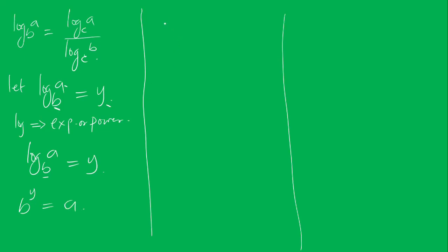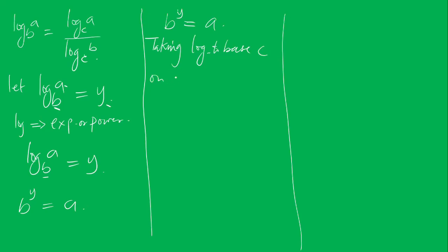Now that means B to the power of Y is equal to A. Taking log to base C of both sides, we will now have log of B to the power Y base C is equal to log A base C.